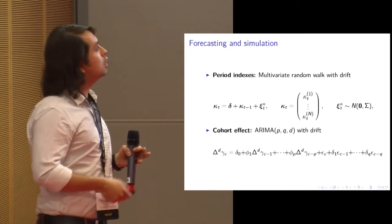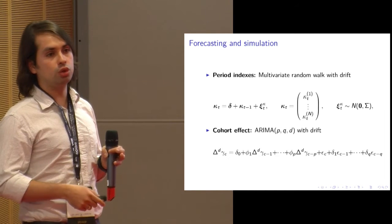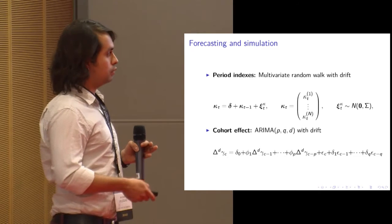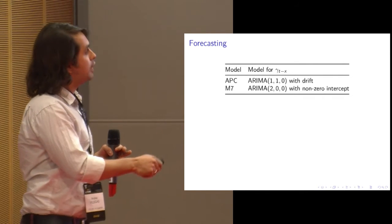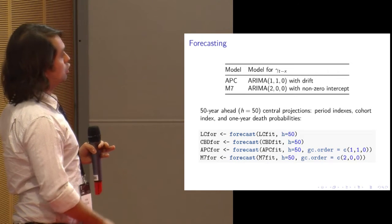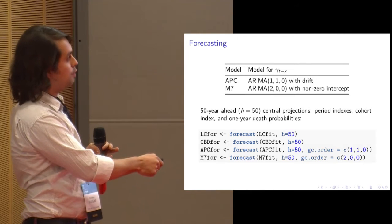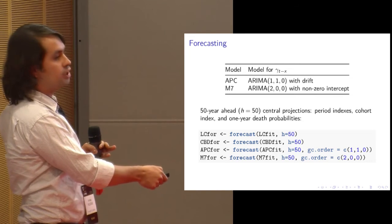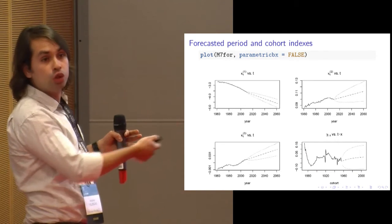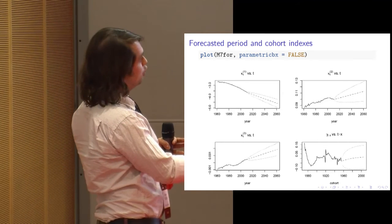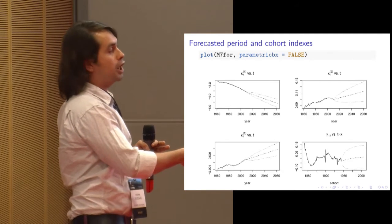Once you have chosen a reasonable model, you can forecast it. StMoMo assumes the kappa-t's follow a multivariate random walk with drift, and for cohort effects you can choose any ARIMA model supported by statistical analysis. For example, you might use ARIMA(1,1,0) for the APC cohort effect and ARIMA(2,0,0) for M7. You use the forecast function on the fitted model, specifying the horizon and — when there is a cohort effect — the ARIMA order. The results can be plotted, showing forecast trajectories for kappa terms and the gamma cohort term.